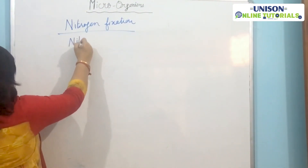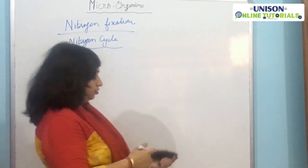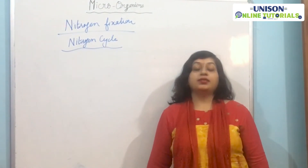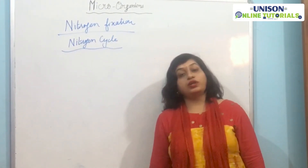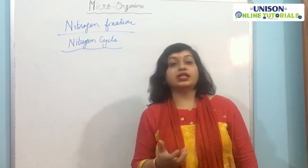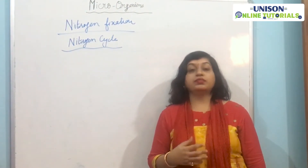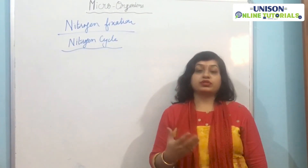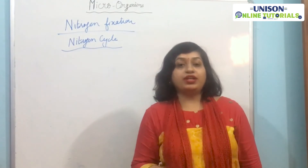In the nitrogen cycle, atmospheric nitrogen is converted into compounds of nitrogen by different types of microorganisms. These compounds, like nitrates, go into the soil. Plants then take those nutrients from the soil for their growth and development. Plants convert the nitrogen compounds into plant proteins.